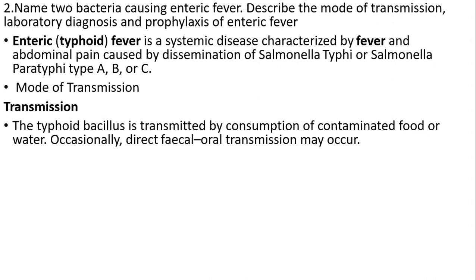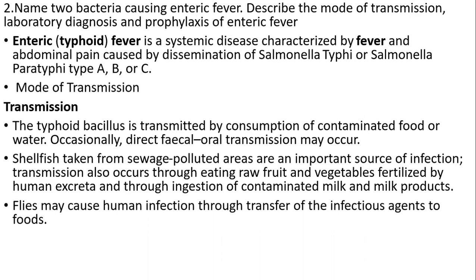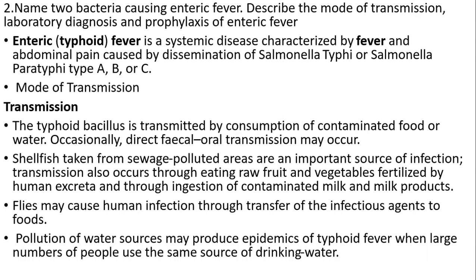Occasionally, direct fecal-oral transmission may occur. Shellfish taken from sewage-polluted areas are an important source of infection. Transmission also occurs through eating raw fruit and vegetables fertilized by human excreta, and through ingestion of contaminated milk and milk products. Flies may cause human infections through transfer of infectious agents onto fruits. Pollution of water sources may produce epidemics of typhoid fever when large numbers of people use the same source of drinking water.